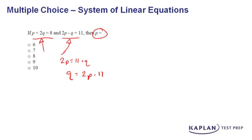Once we've got this value, we can plug this into our other equation, and instead of P plus 2Q equals 8, we'll write P plus 2 and substitute in the value of Q we've just solved for, 2P minus 11 equals 8.